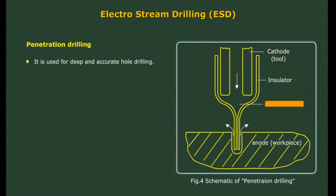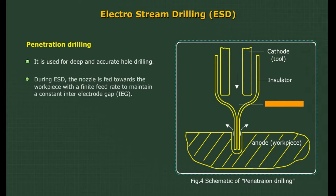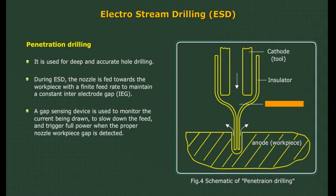Penetration drilling is used for deep and accurate hole drilling. During ESD, the nozzle is fed towards the workpiece with a finite feed rate to maintain a constant inter-electrode gap. A gap sensing device monitors the current being drawn to slow down the feed and trigger full power when the proper nozzle-to-workpiece gap is detected.